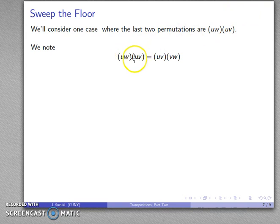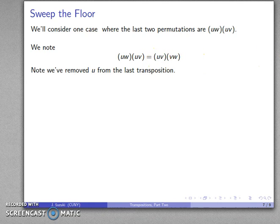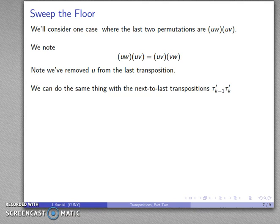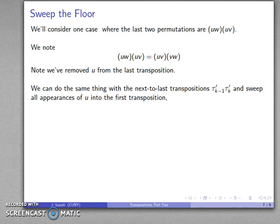We note that this product of transpositions (U, W)(U, V) can be rewritten as (U, V)(V, W). You should be able to prove that that's the case. The important observation here is that U has been removed from the last transposition — it was in the last transposition but has now been eliminated and moved to the next-to-last transposition. Once we've done that, we can repeat the same process with the next pair. U is in this transposition, but we can move it to the one before. In this way, we can sweep all appearances of U into the first transposition only, giving us the identity as a product of transpositions where U is in the first but in none of the other transpositions.